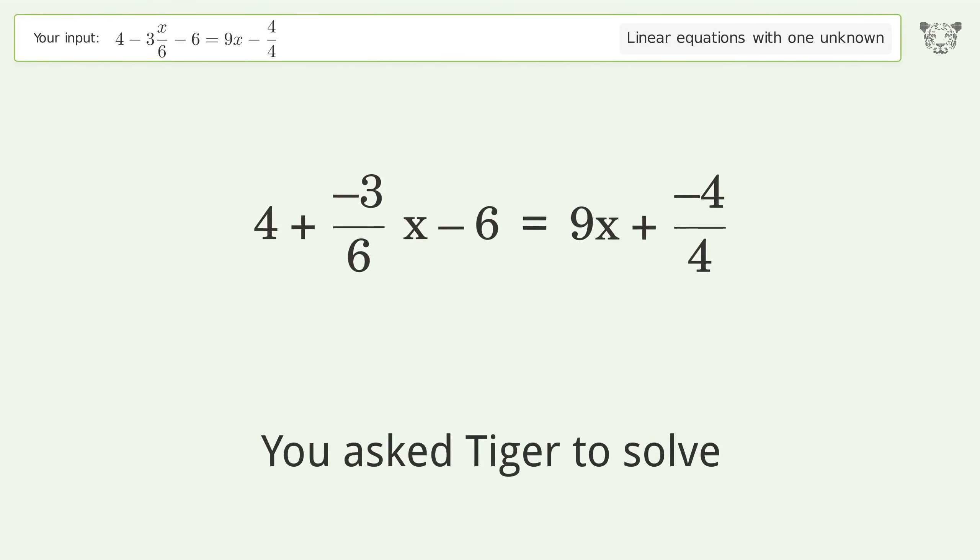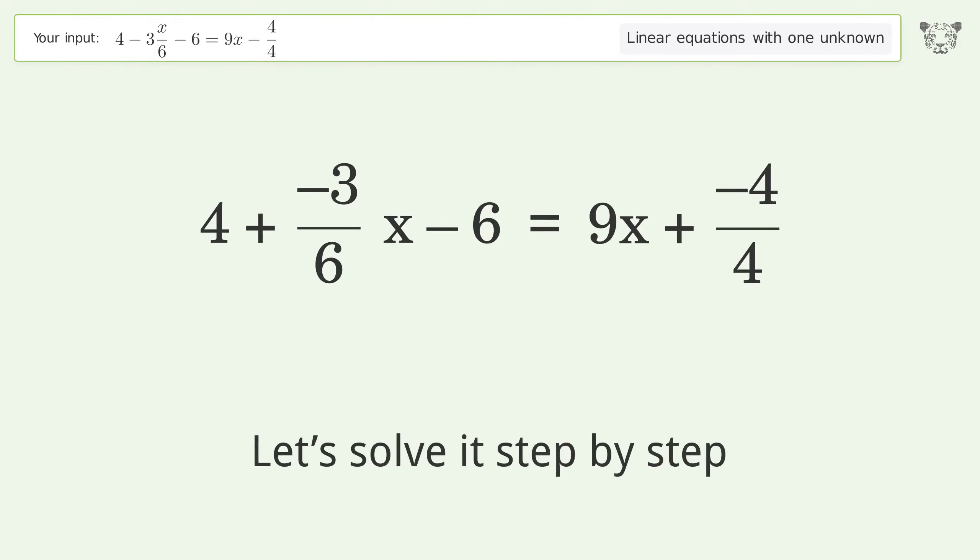You asked Tiger to solve this. This deals with linear equations with one unknown. The final result is x equals negative 2 over 19. Let's solve it step by step.